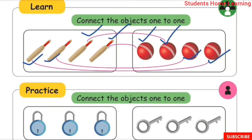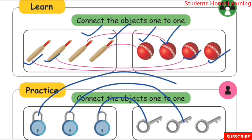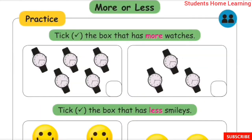Match cute objects one to one: one lock with one key. Match this lock with this key, and this lock with this key, and this lock with this key.